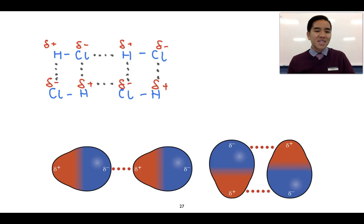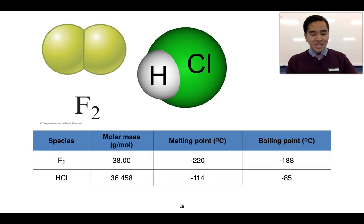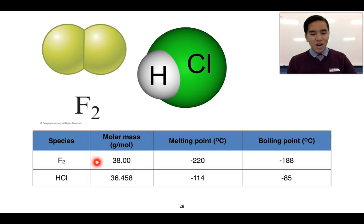These interactions can be quite extensive and as a result are generally seen to be stronger than dispersion forces between molecules of a similar mass. To look at this idea, we can compare fluorine (F₂) and hydrogen chloride (HCl). What we can see is that HCl actually has the greater melting and boiling point than F₂.